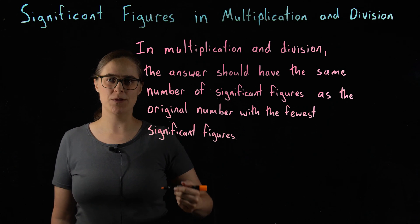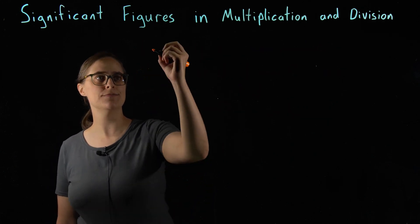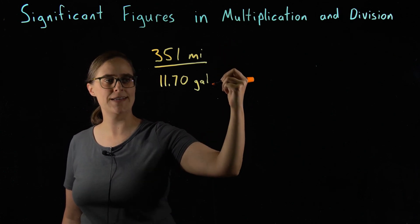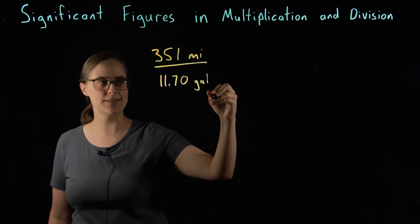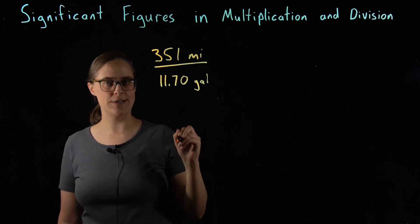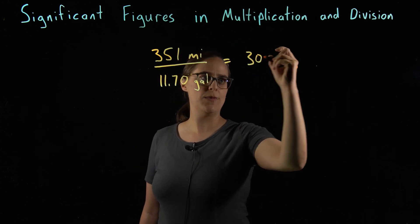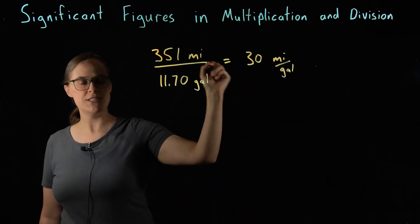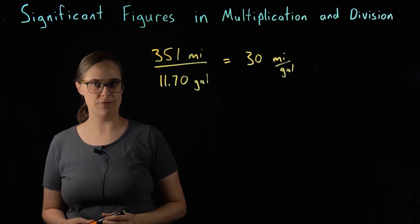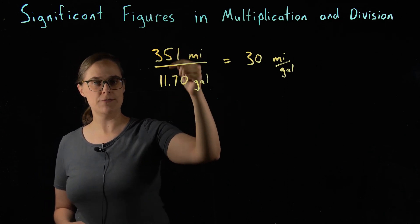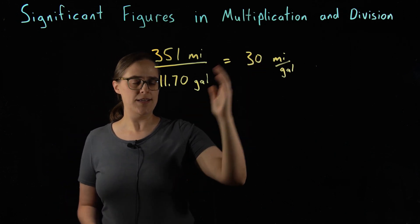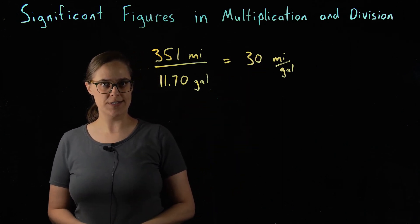Let's do an example problem. We are going to calculate a gas mileage: 351 miles divided by 11.70 gallons. If you type this into your calculator, the answer the calculator gives you is 30.0 miles per gallon. There is a major problem with this number — your calculator does not care about significant figures. It assumes the original numbers you gave it have infinite significant figures and gives you a number without regard to significant figures.